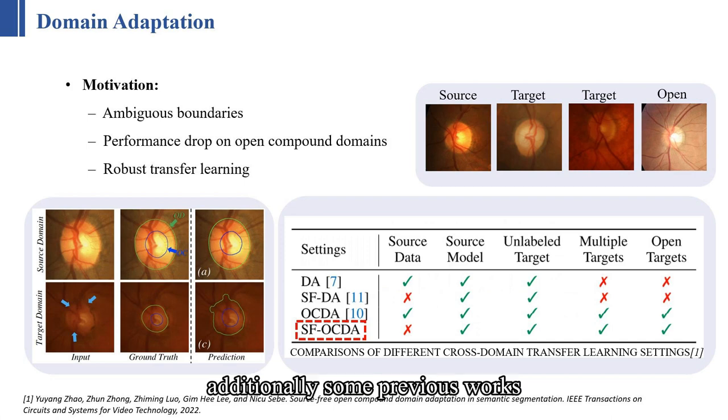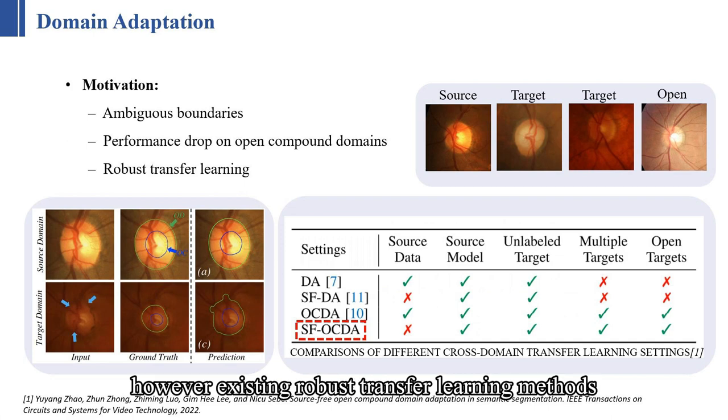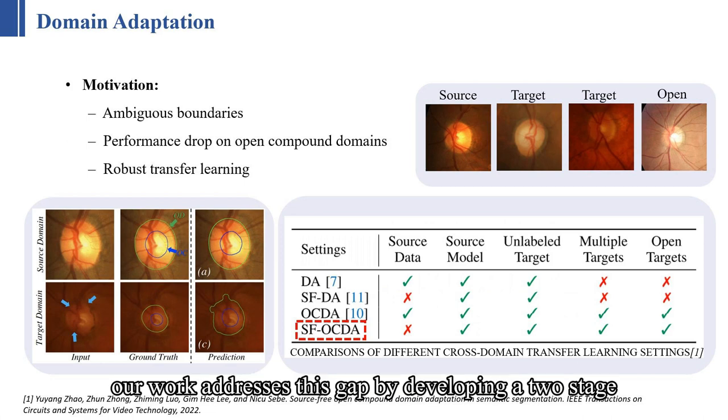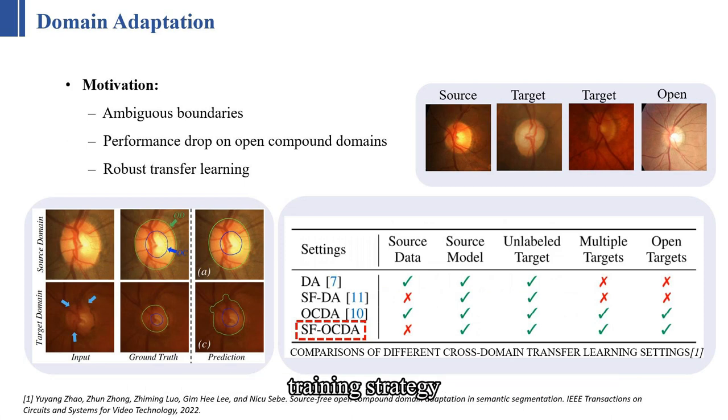However, existing robust transfer learning methods have not been studied or tested in the context of SFOCDA. Our work addresses this gap by developing a two-stage training strategy.